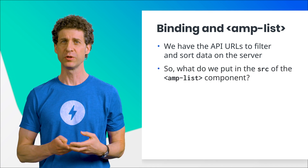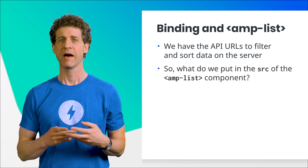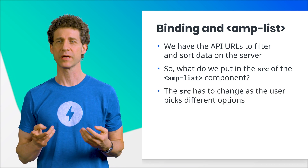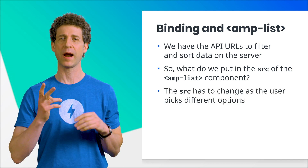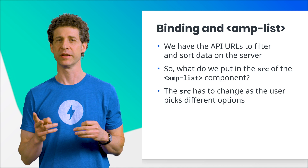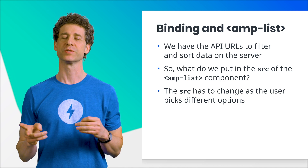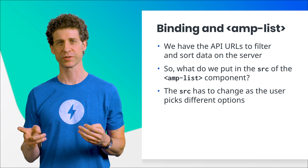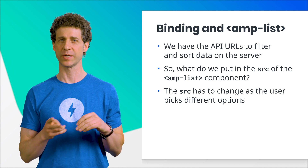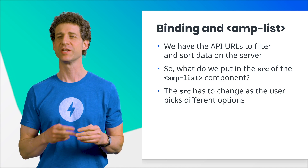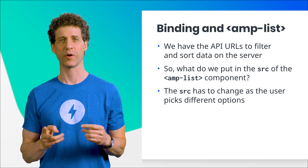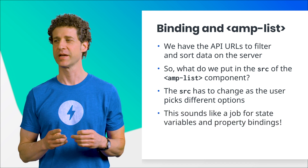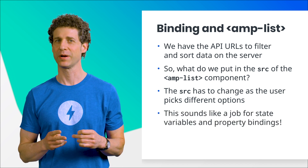But how do we do this within the AMP List component? How do we use query parameters there? We can update the SRC property of the AMP List component in response to user actions. If the user selects certain filters or sorts, we can change the SRC property to change the URL and query parameters. This sounds like a perfect job for state variables and property bindings.